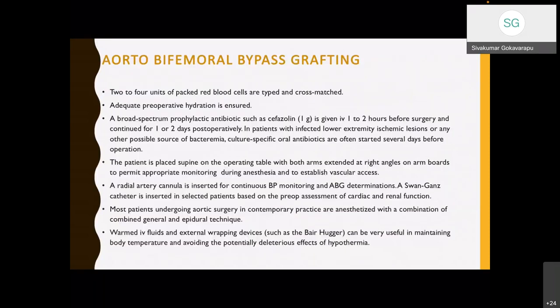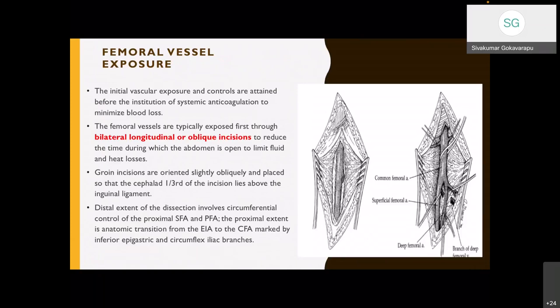For aortobifemoral bypass grafting, this is a major surgery. The patient is prepared with adequate hydration preoperatively, antibiotics, and positioned supine with arms extended. Radial artery cannulation is used for monitoring BP and ABG, and central venous catheterization is performed. A combined epidural and general anesthesia is generally used, and intraoperative prevention of hypothermia is needed.